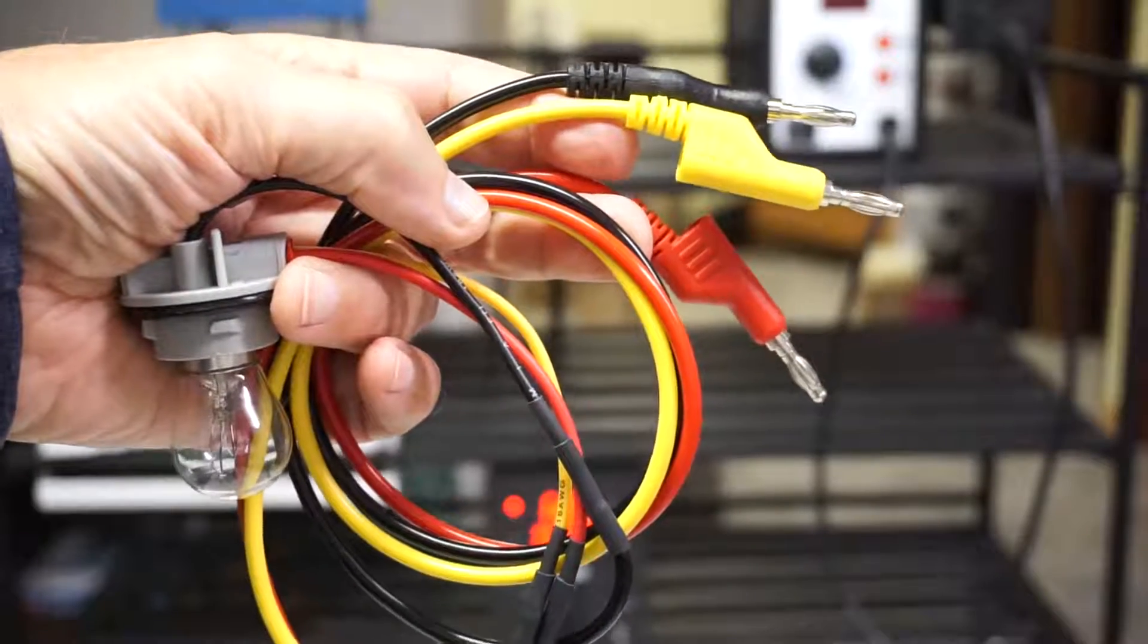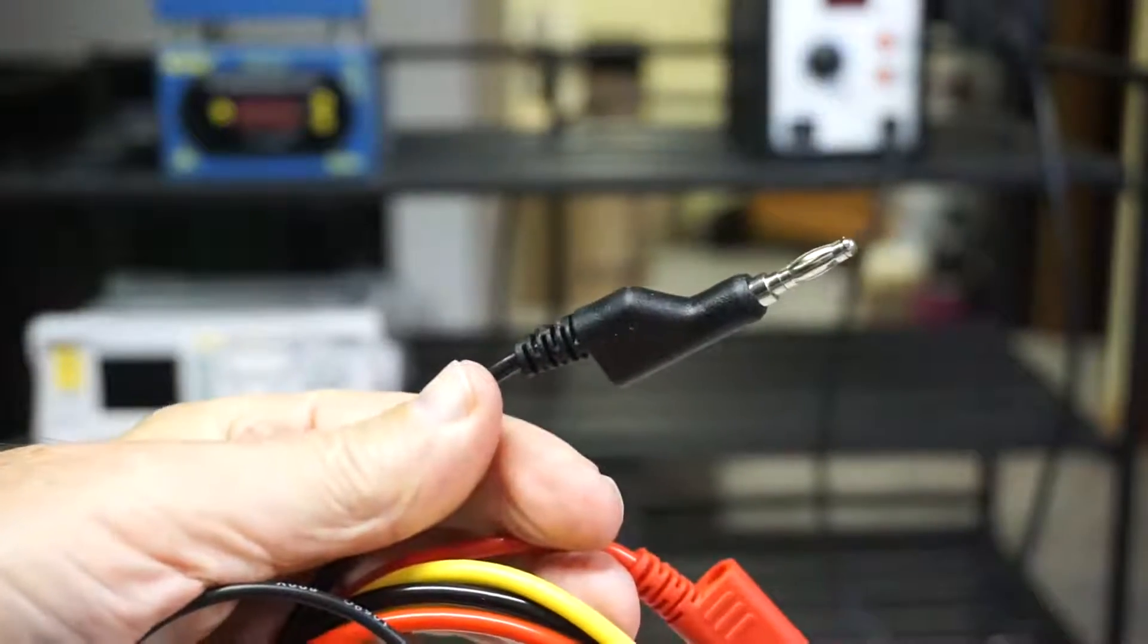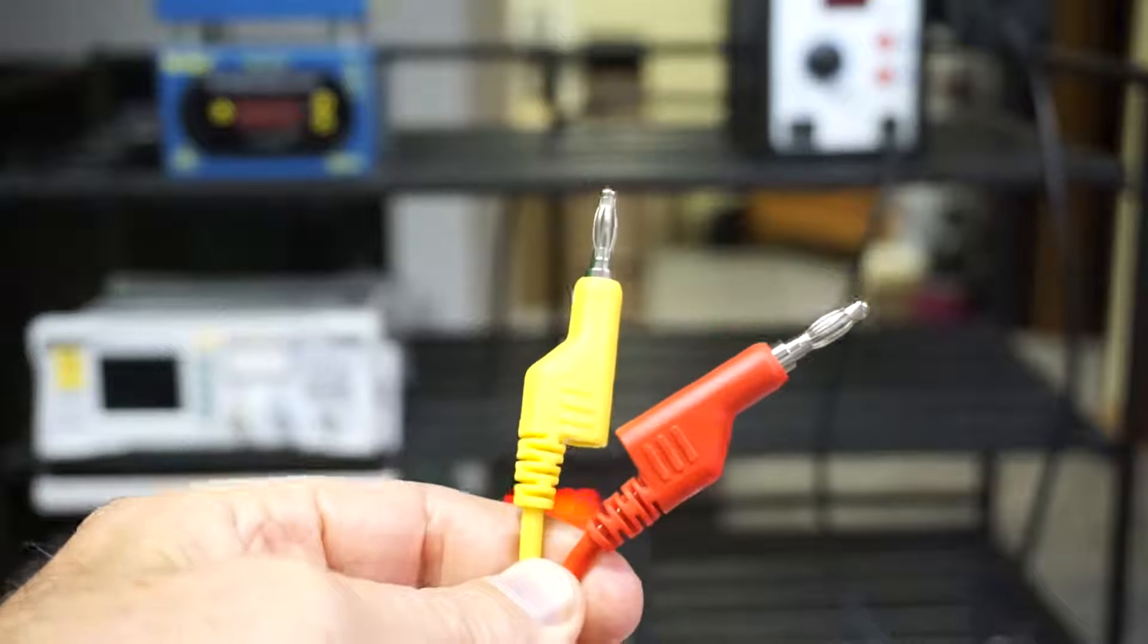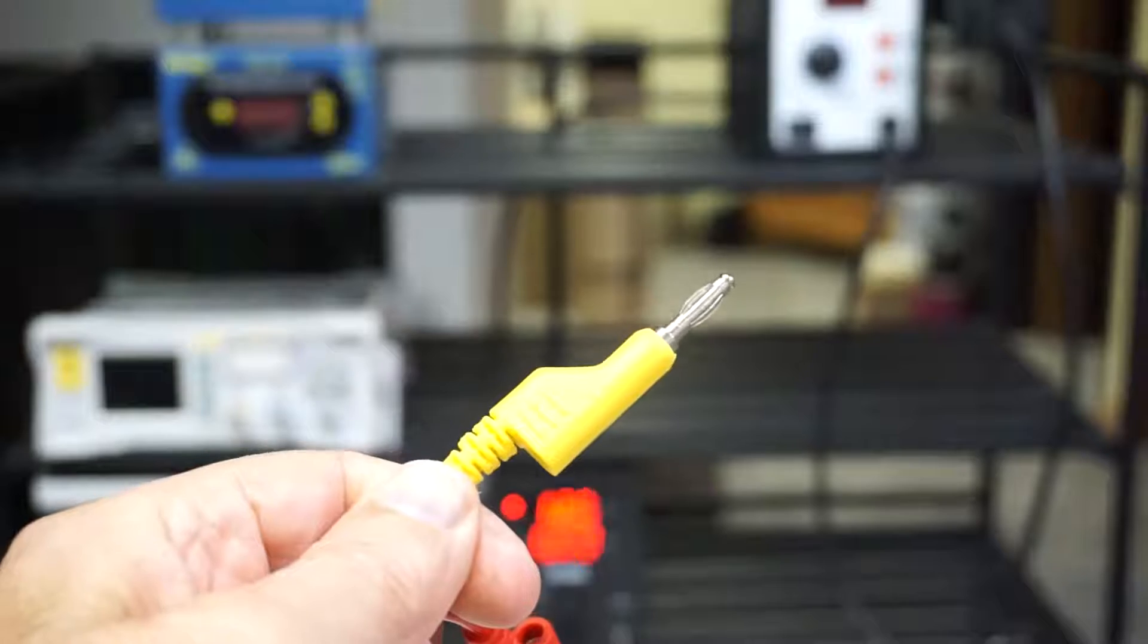And these colors are intuitive. Like which one would be our ground here? Correct. And of these two, which would be our lowest amp draw? Correct.